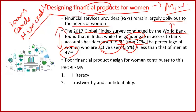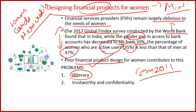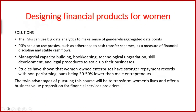The Global Findex Survey measures financial inclusion levels across different economies. One major reason for this gap is poor financial product design. Literacy levels among women are lower than men, and despite improvements shown in Census 2011 data, a considerable gap still exists. Financial products designed for women must also be more trustworthy and confidential to protect their privacy, which current designs fail to address.